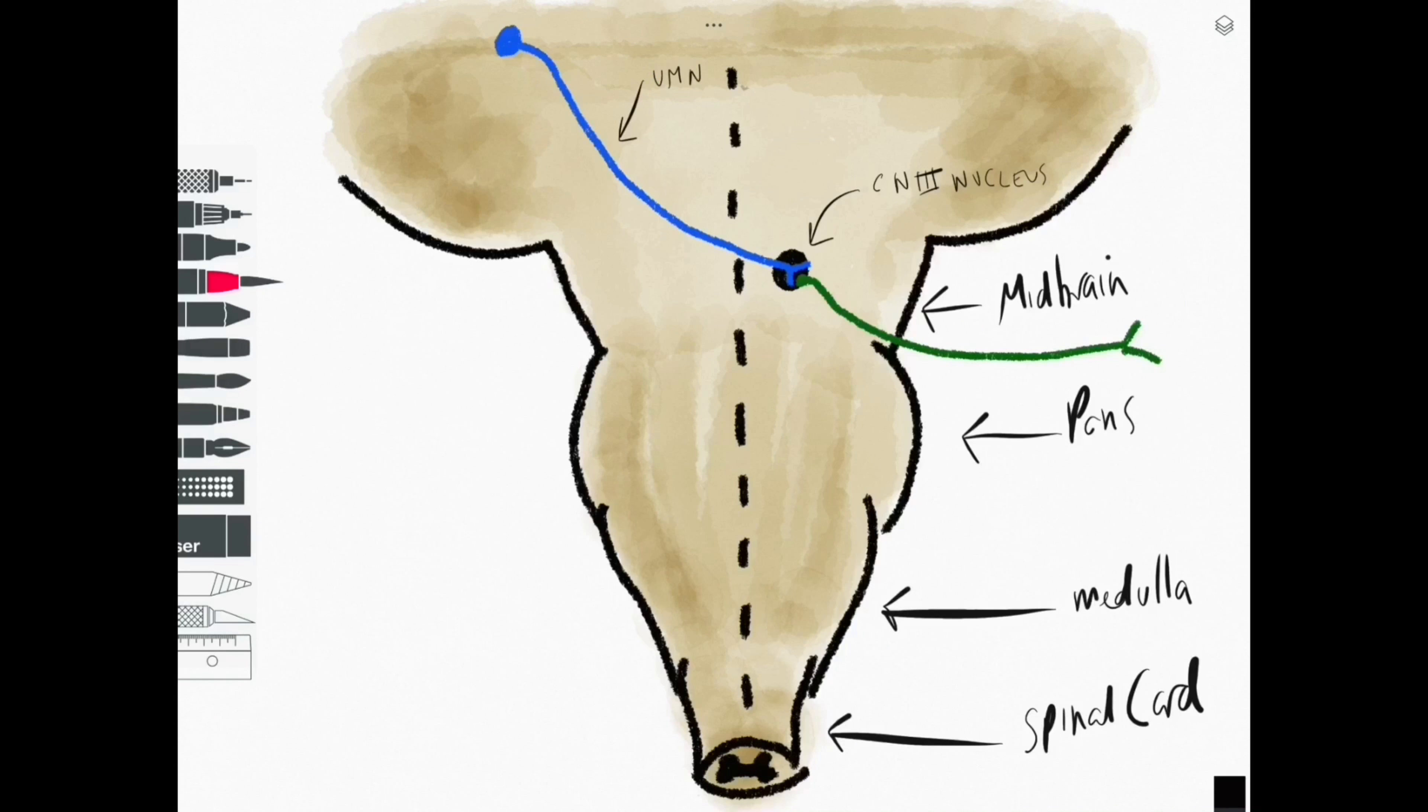We now need to bring on our blood supply. This is the posterior circulation coming up the brainstem, also known as the vertebrobasilar arterial system.